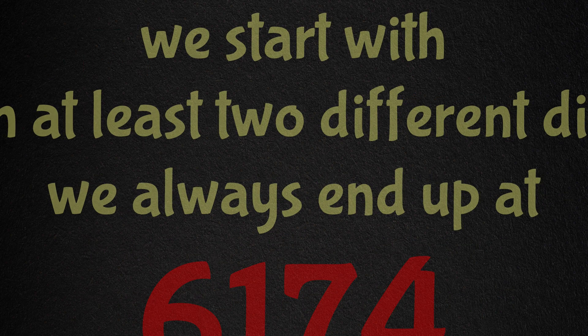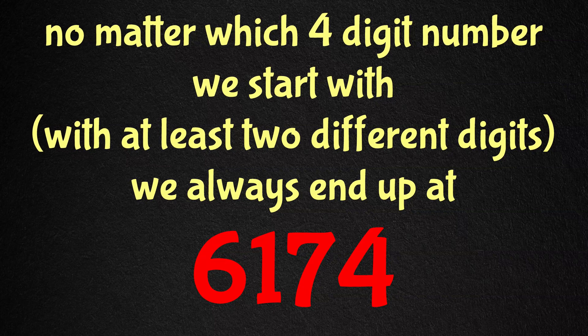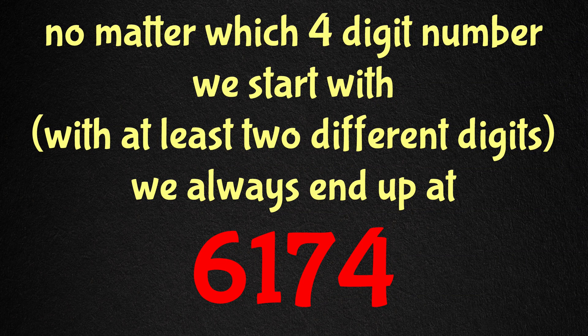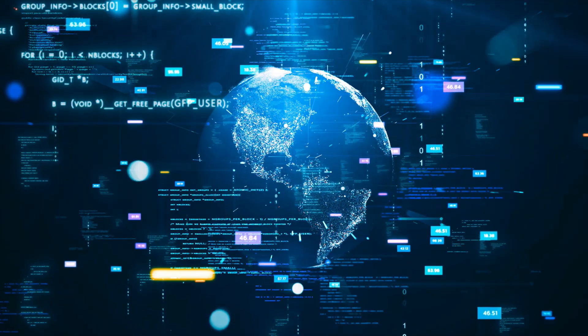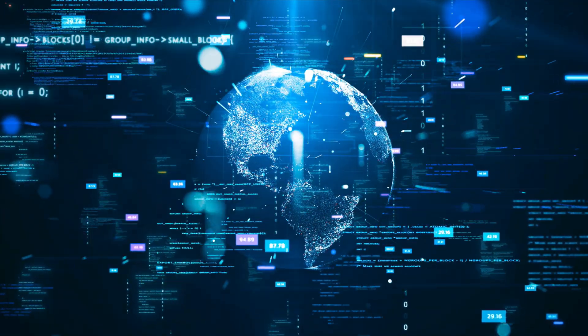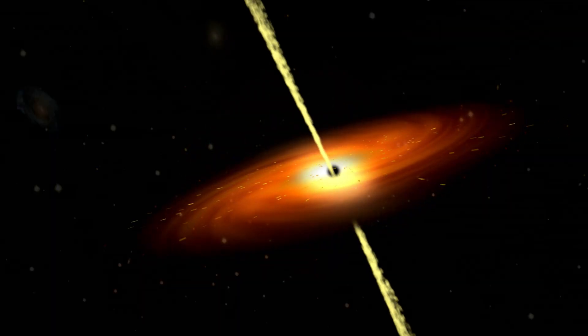What makes this phenomenon truly extraordinary is its universality. Whether you start with 3524, 9998, 1234, or any other qualifying four-digit number, you will inevitably arrive at 6174. It's as if this number possesses a magnetic field that captures all other four-digit numbers in its orbit. Sort of like a black hole.